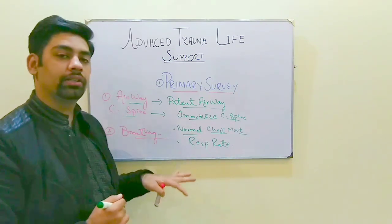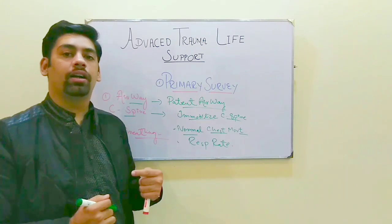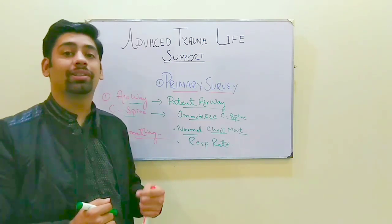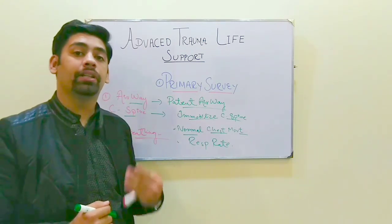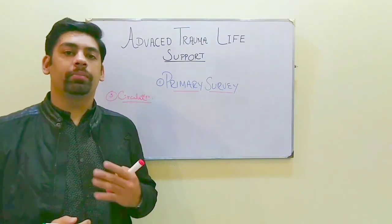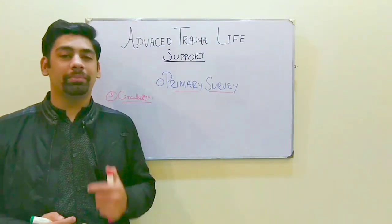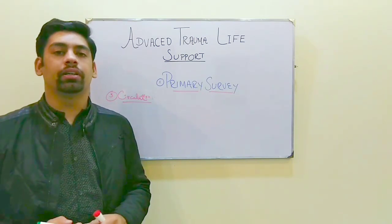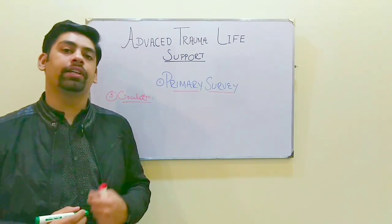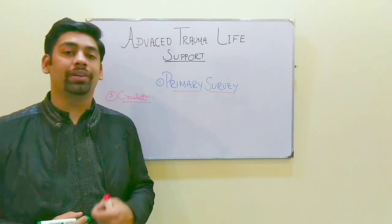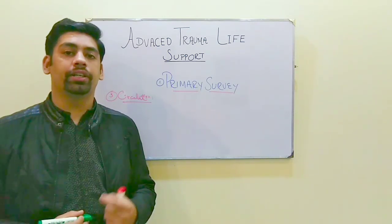The most common complication in the breathing component is the development of pneumothorax or hemothorax in the chest cavity, which can hamper breathing. The third component in the primary survey is the circulation. We check the BP and the pulse rate of the patient, which can give us an indication of any circulatory defect the person is facing after an injury.